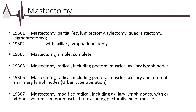Coding concepts for mastectomy include complexity and with or without muscle removal. A partial mastectomy is described as a lumpectomy, tylectomy, quadrantectomy, or segmentectomy. If the surgeon also removes axillary lymph nodes, both portions of the surgery are reported with a single code. The remaining mastectomy codes describe the extent of the surgery. Simple complete is the removal of just the breast. Radical includes the pectoral muscle and axillary lymph nodes. Radical mastectomy includes the breast, pectoralis muscle, and the axillary and internal mammary lymph nodes, or urban type. A modified radical mastectomy includes axillary lymph nodes with or without pectoralis minor muscle, but excludes pectoralis major muscle.